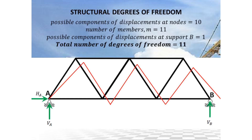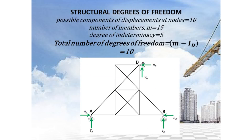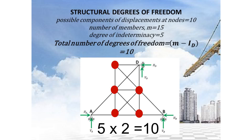To recap: when dealing with a truss, count the number of nodes (excluding supports) and multiply by two — that gives the possible components of displacements at nodes. For this truss, five nodes times two equals 10. The degree of indeterminacy for this truss is 5, and there are 15 members.